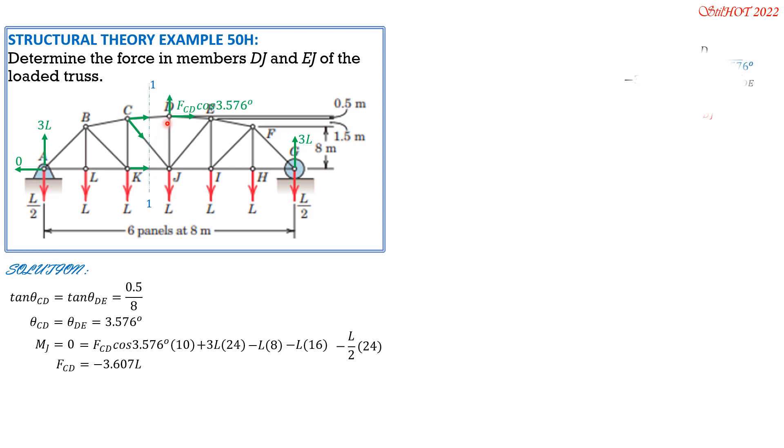Then let's isolate joint D and draw the FBD. So obviously, FDE equals FCD, but let's still show that they are equal by setting RDH equals 0 or the horizontal component of resultant at J equals 0. So equals FDE cosine 3.576 degrees minus quantity negative 3.607L cosine of 3.576. So cancel cosine 3.576. Then FDE is also negative 3.607L as mentioned earlier.